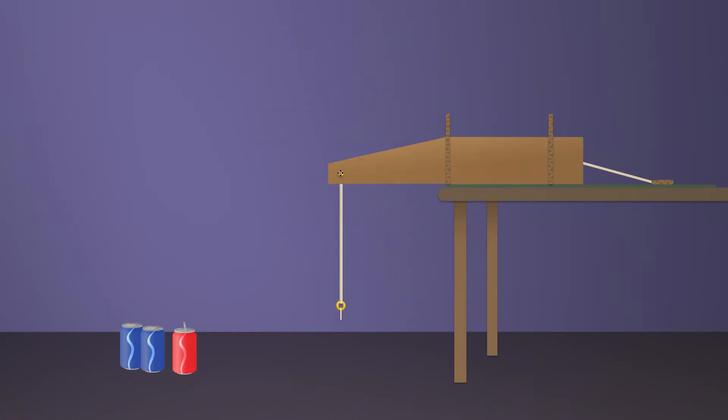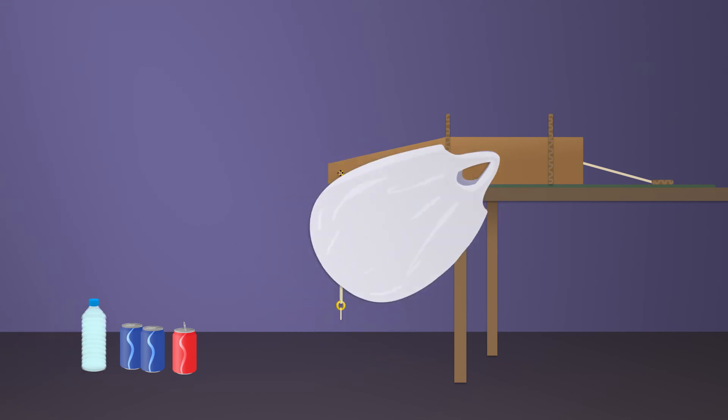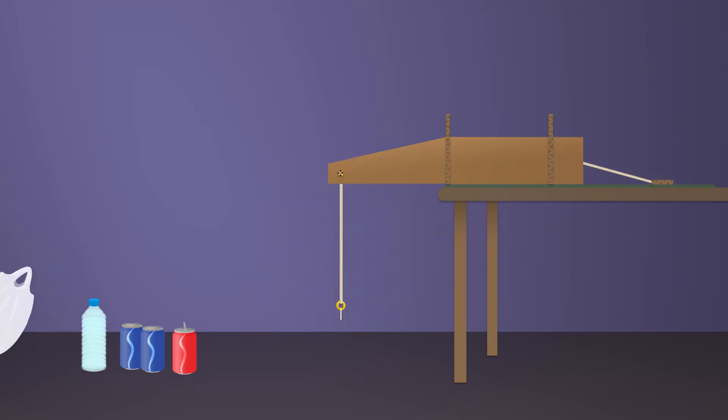Now that you have a working crane and pulley, it's time to test it. For this you will need your drinking water or soda bottles or your tins. Their labels should say how much they hold. And you will need something to tie them to the bottom pulley. A plastic shopping bag might be useful.